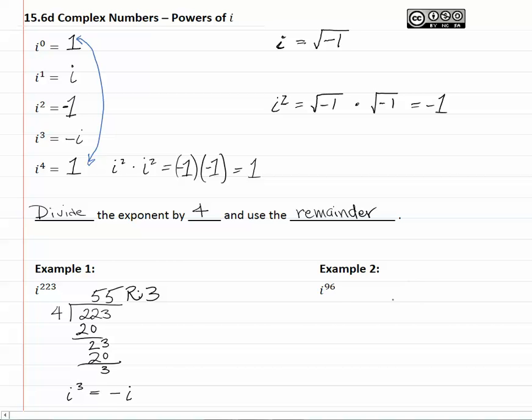i to the 96th. We take the number 96, which is the exponent on the imaginary number, divide it by 4. 2 times 4 is 8, remainder 1, bring down the 6. 4 times 4 is 16, remainder 0, and so I write my simplification for the imaginary number as i to the 0, which we know from the example above is equal to 1.